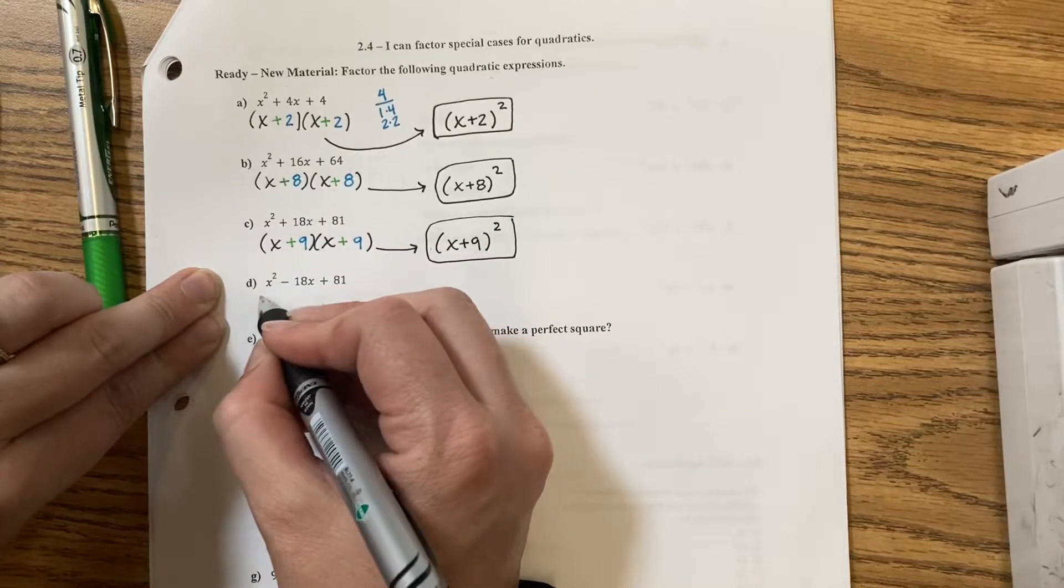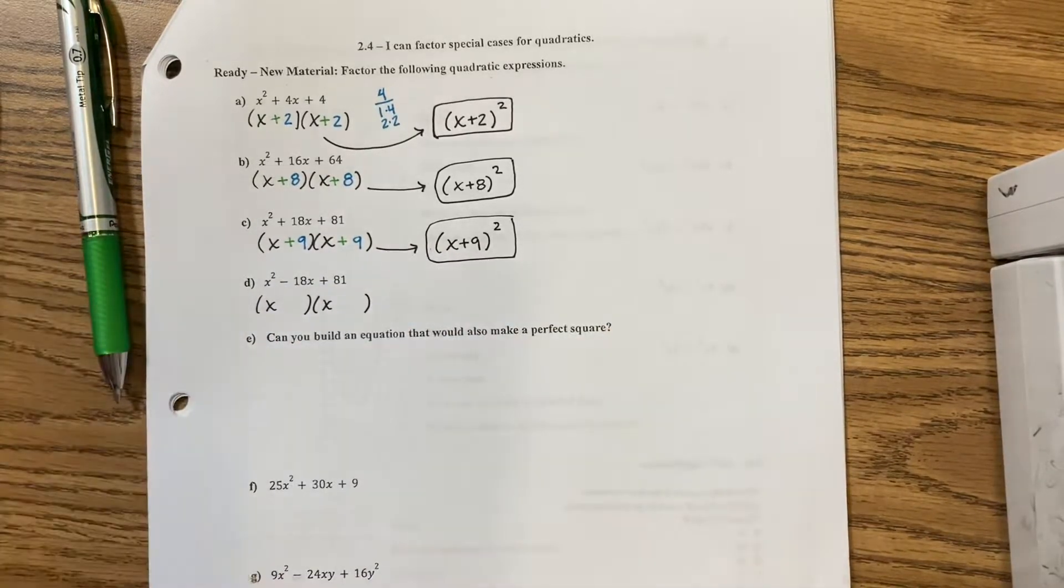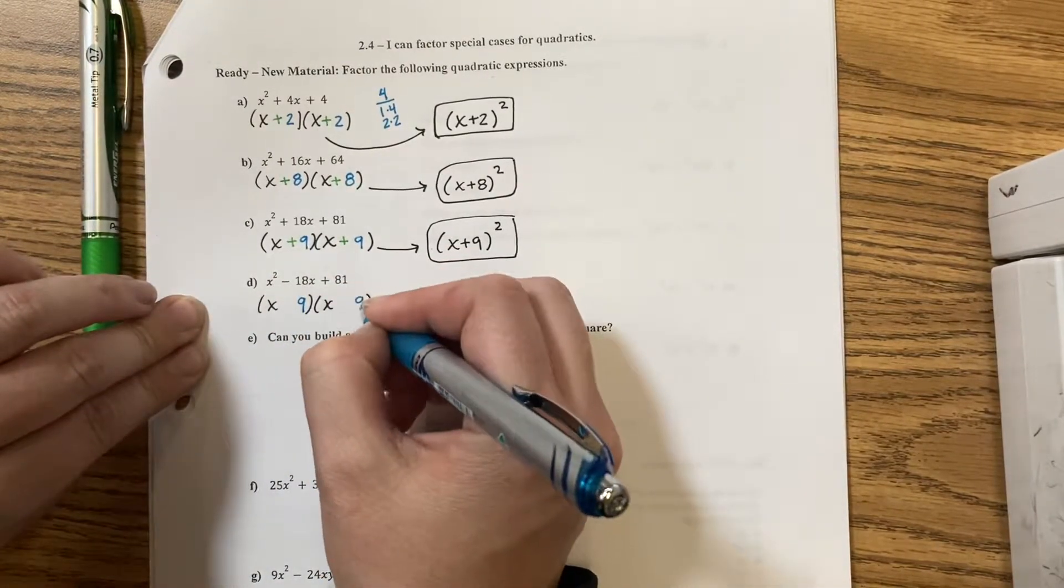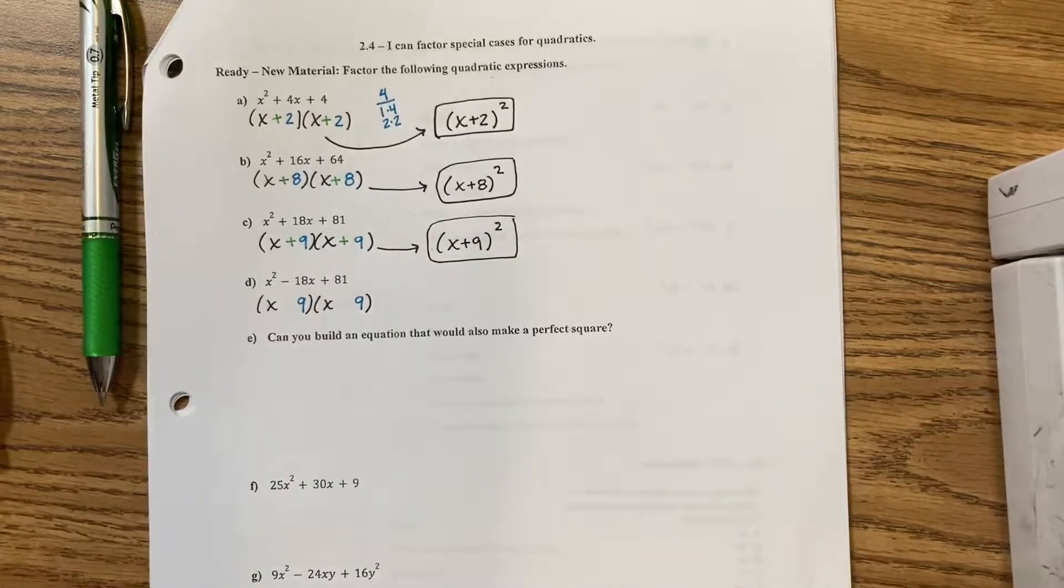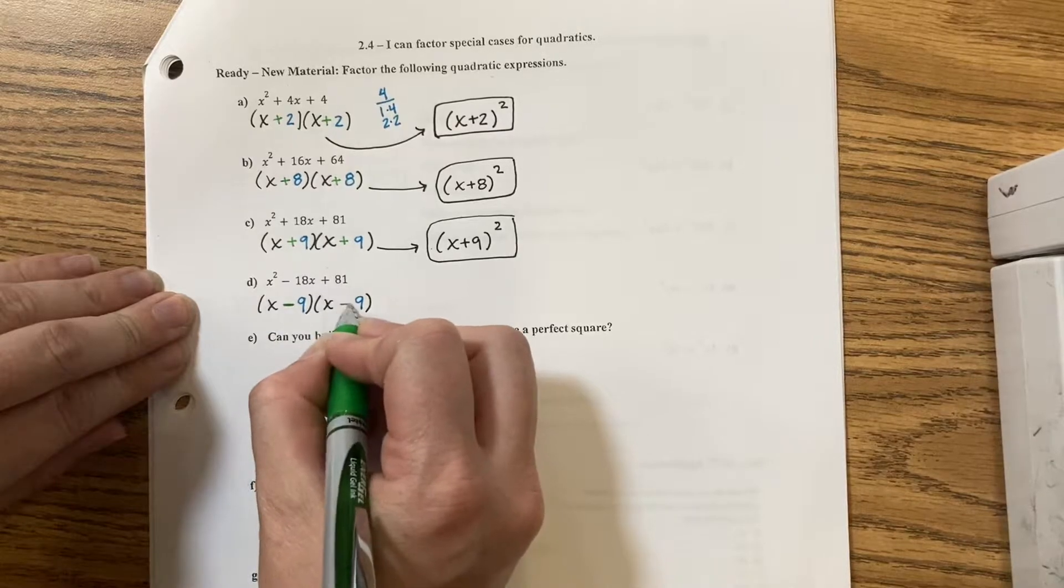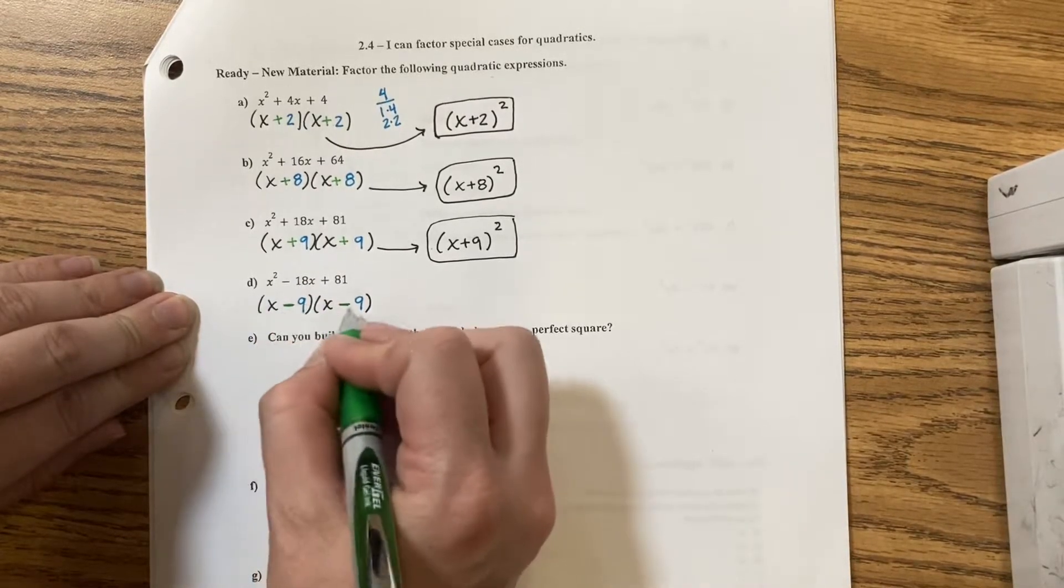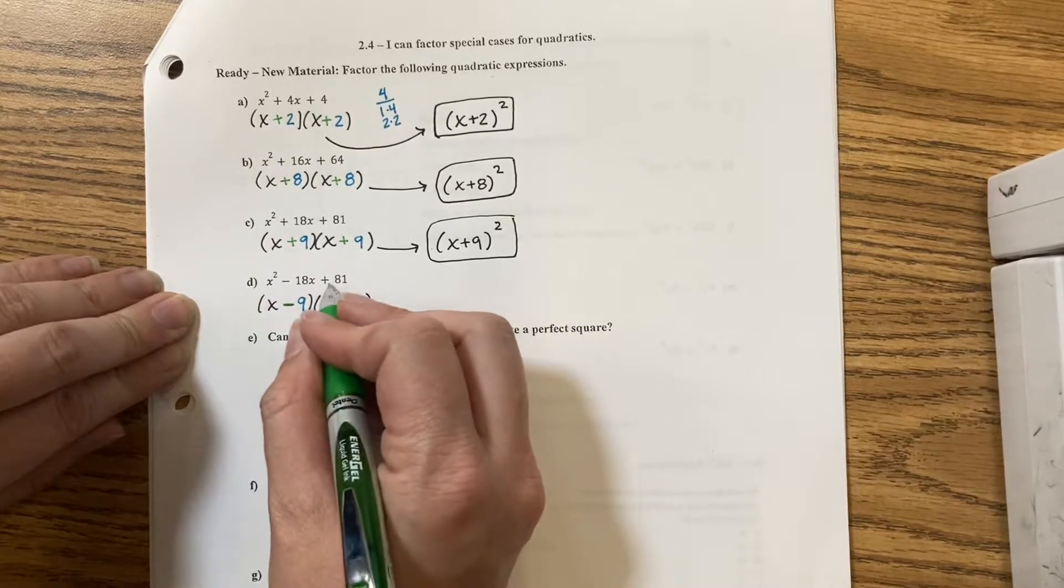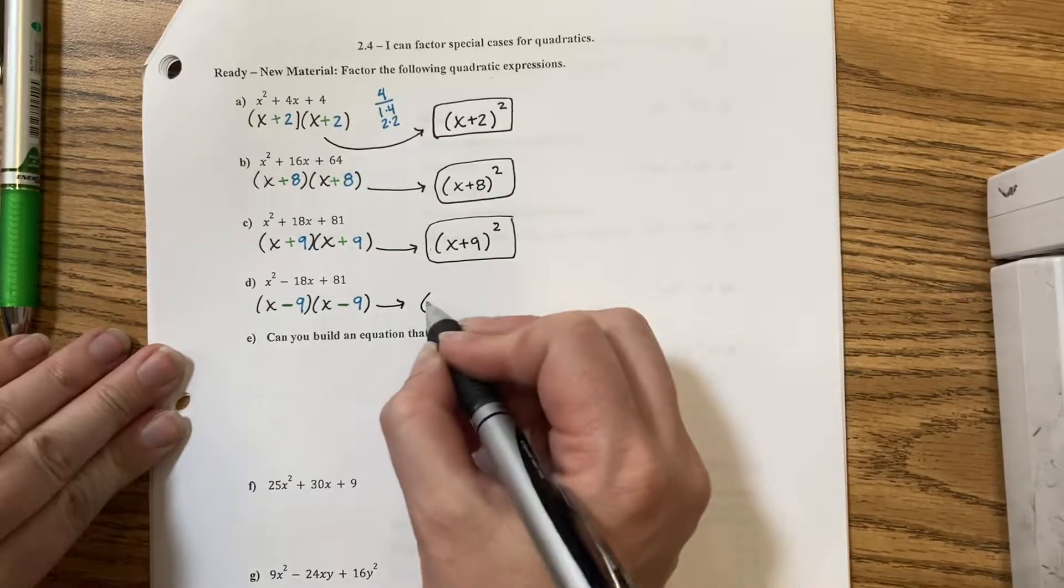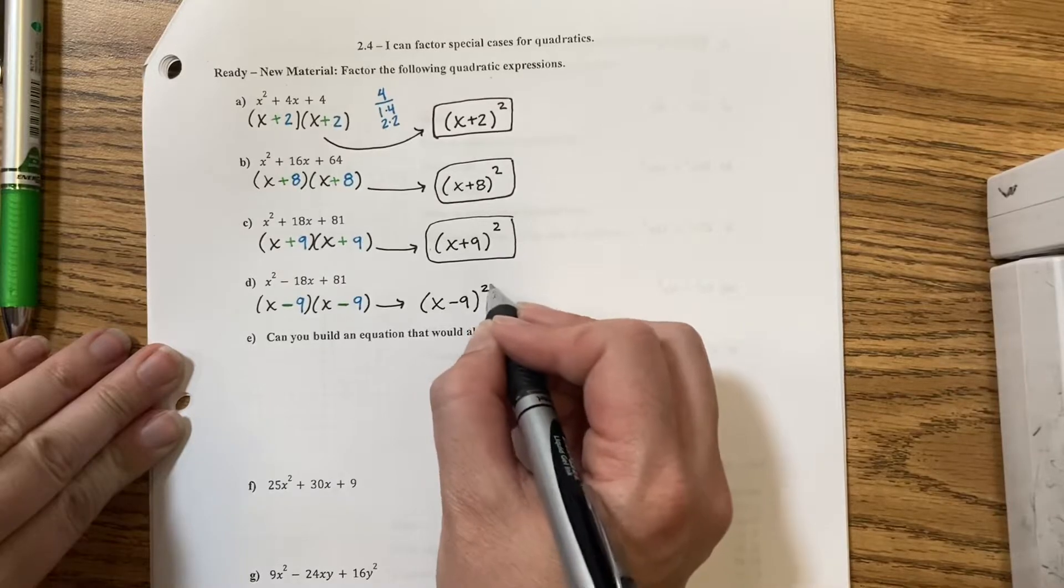I have an x squared in front. x times x. 81 is 9 again. 9 times 9 is 81. Then I have to get it to be a minus 18. So they would both need to be negatives to get negative 18. Negative 9 multiplied by negative 9 makes a positive 81. So for this one, I would have x minus 9 power of 2.